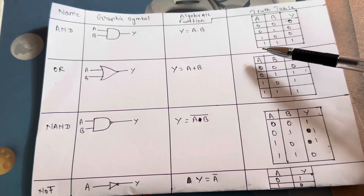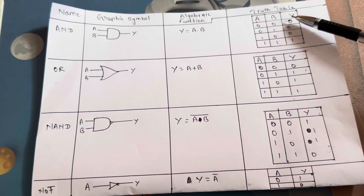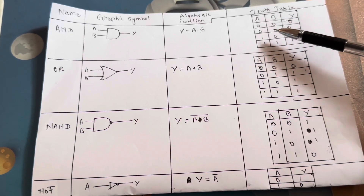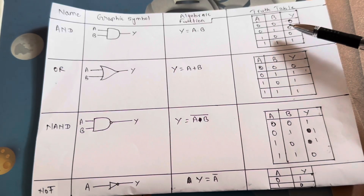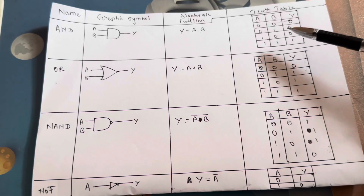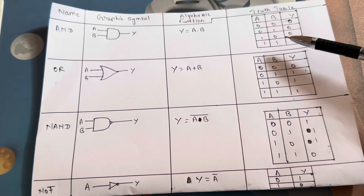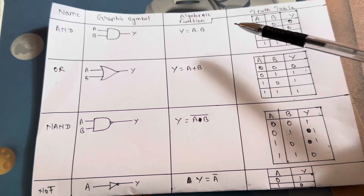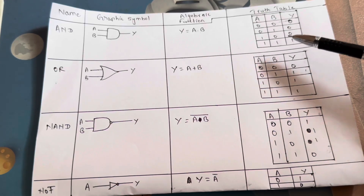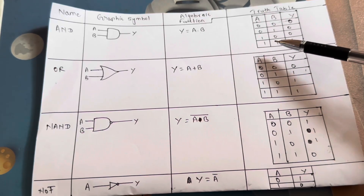The two-bit inputs are: 0,0 — output 0; 0,1 — output 0; 1,0 — output 0; and 1,1 — output 1. So in the AND gate, the output is 1 only when both inputs are 1.